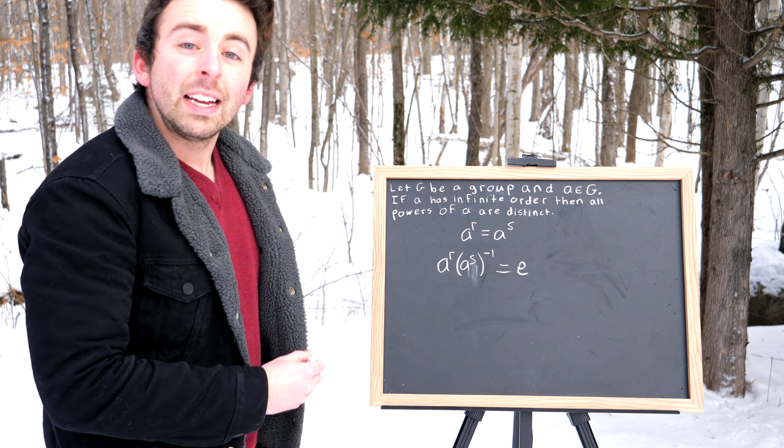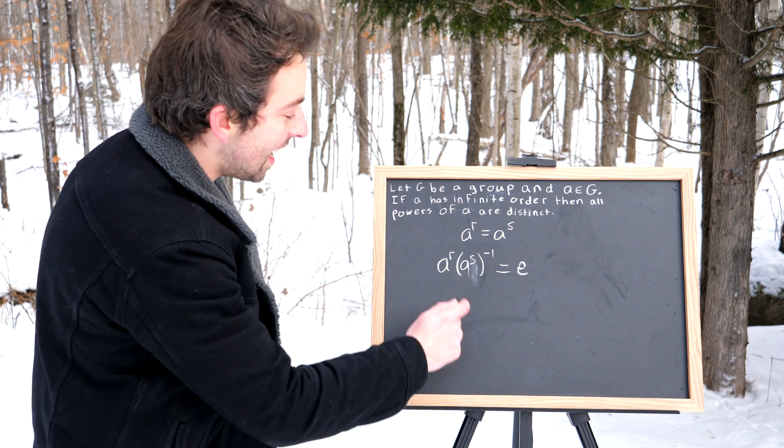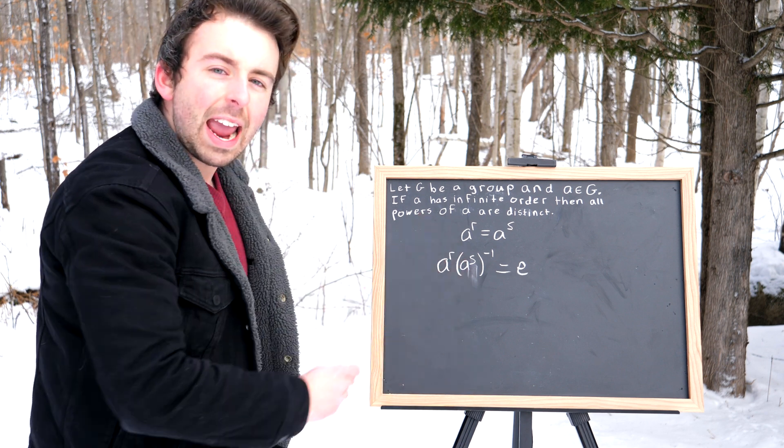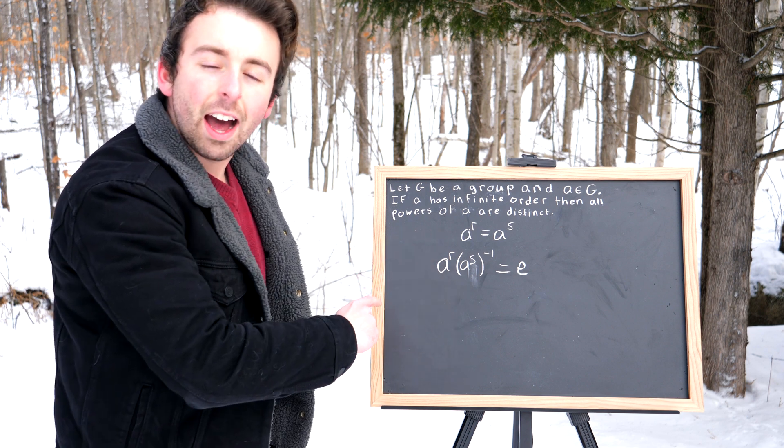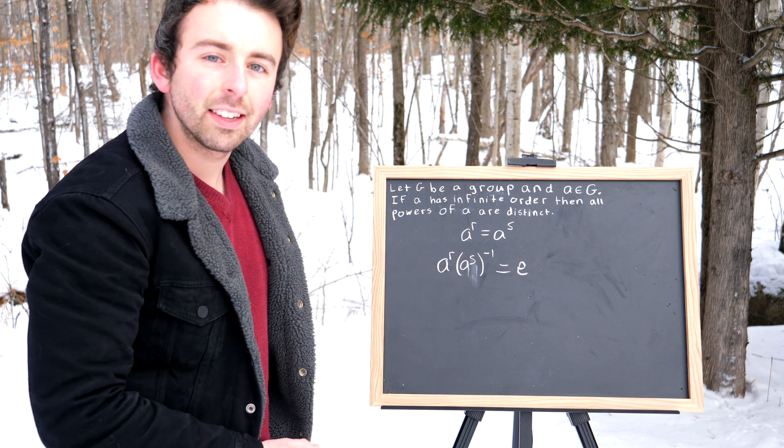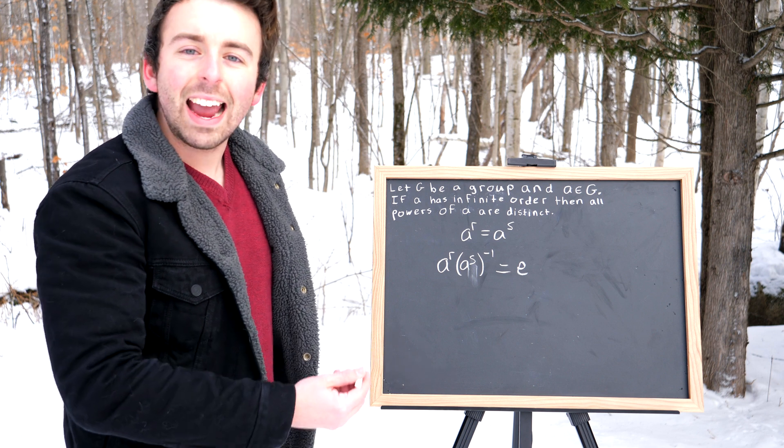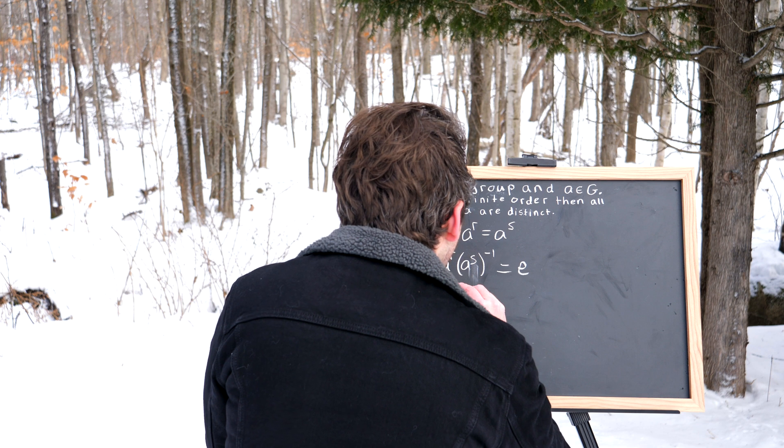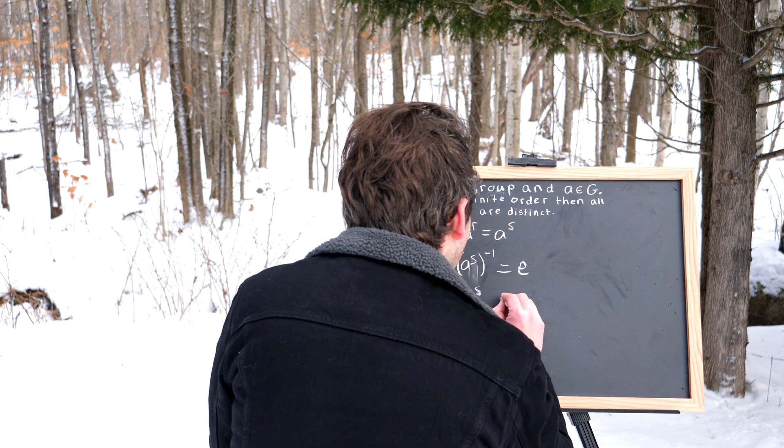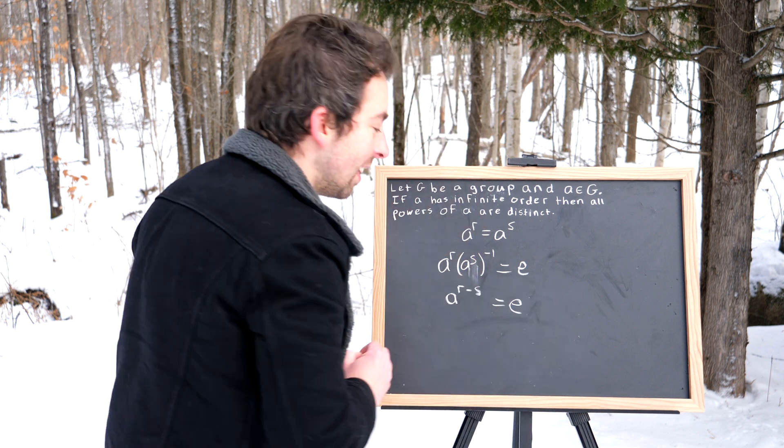And so we're left with this. Now by our exponent laws, A to the R times A to the S inverse is the same as A to the R times A to the negative S, which is the same as A to the R minus S. So this gives us that A to the R minus S equals the identity.